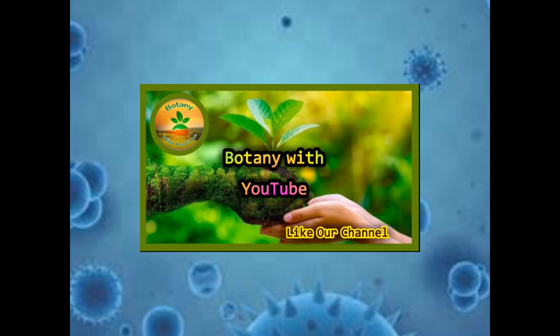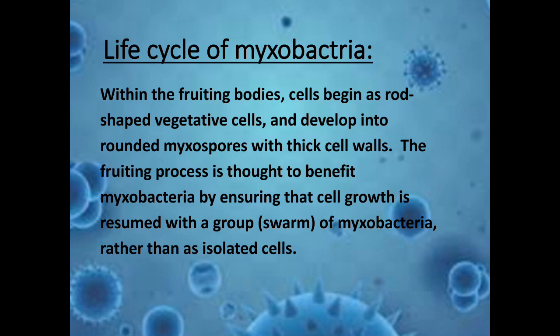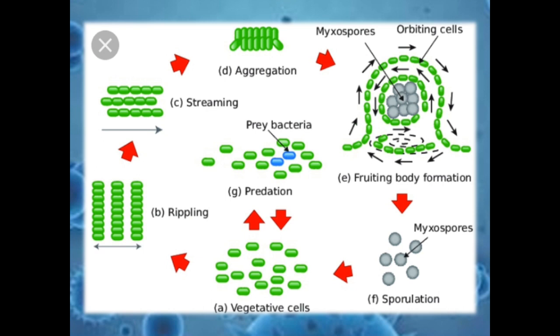Life cycle of Myxobacteria: Within the fruiting body, cells begin as rod-shaped vegetative cells and develop into rounded myxospores with a thick cell wall. The fruiting process is thought to benefit Myxobacteria by ensuring that cell growth resumes within a group rather than as an isolated cell. You can observe in the diagram: vegetative cells, rippling, predation, swarming, aggregation, fruiting body formation, myxospores, sporulation, and back to vegetative cells.